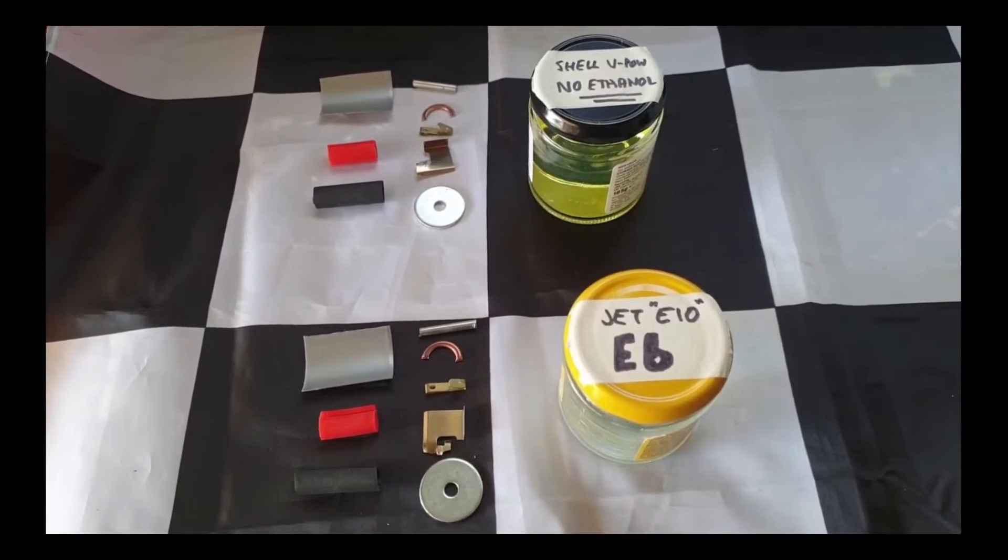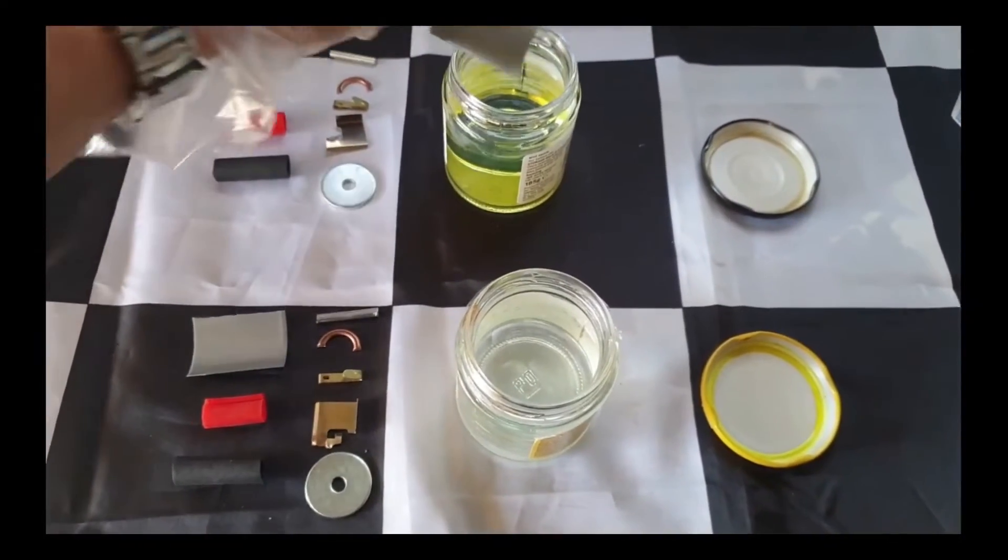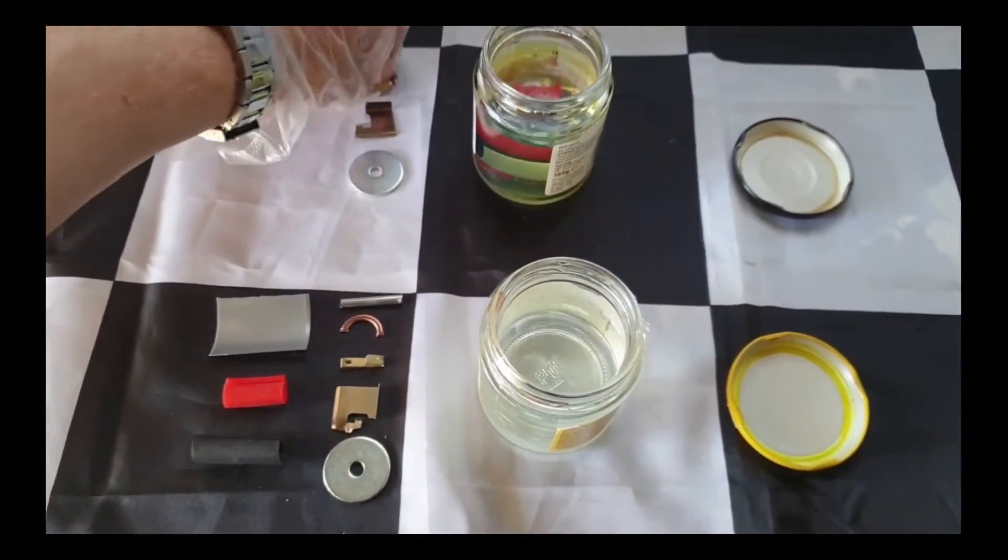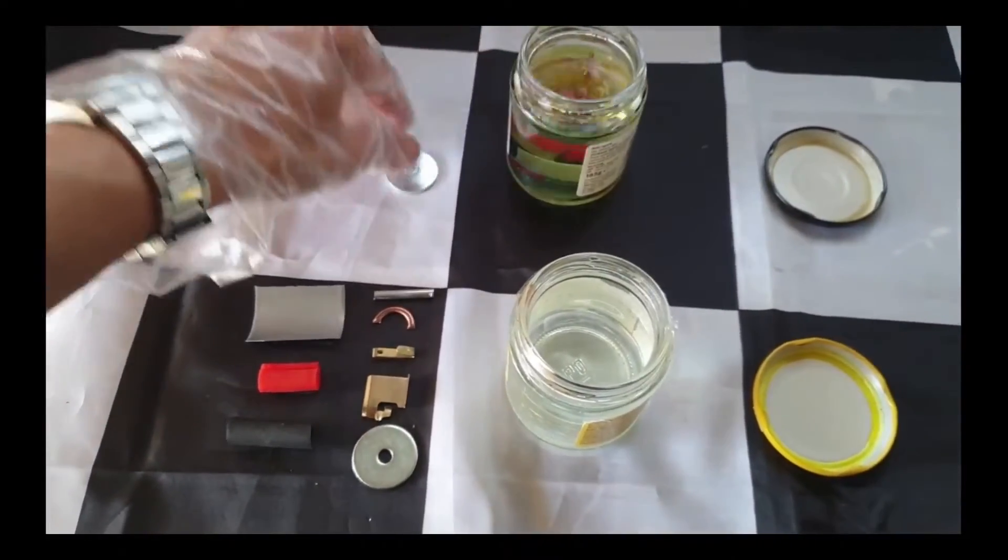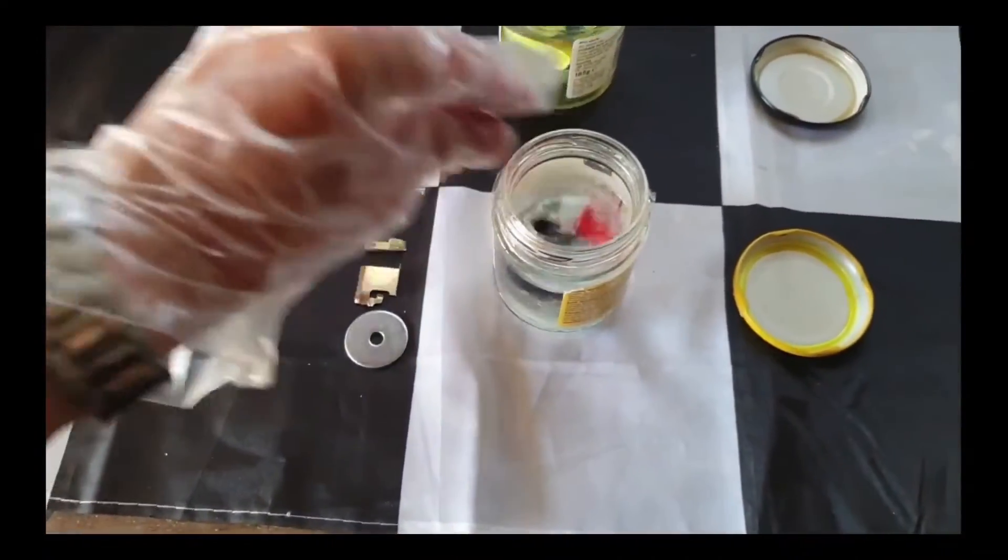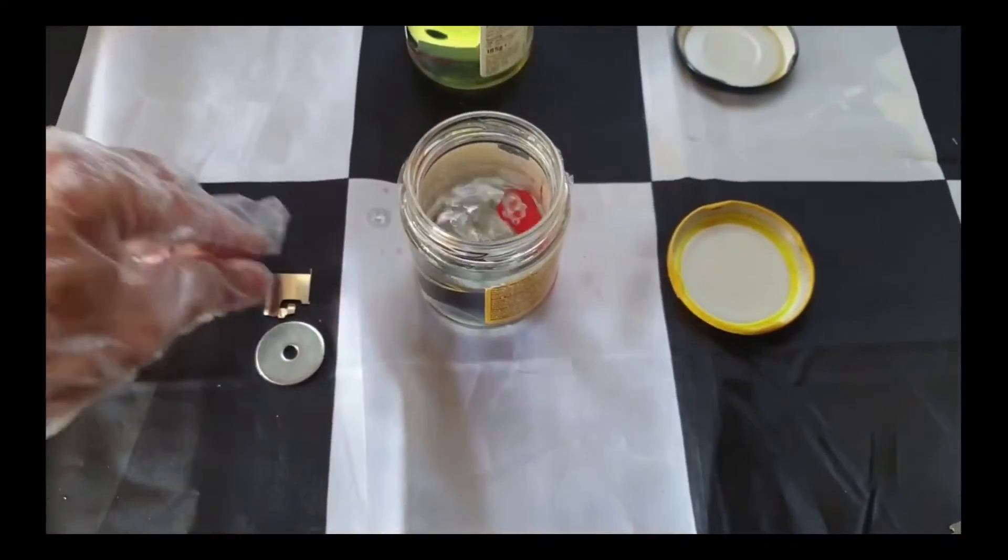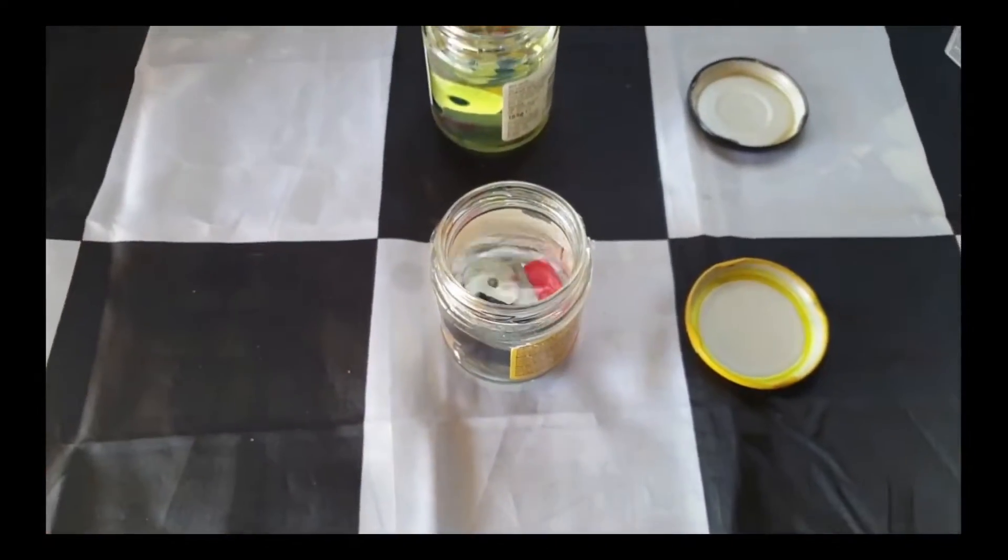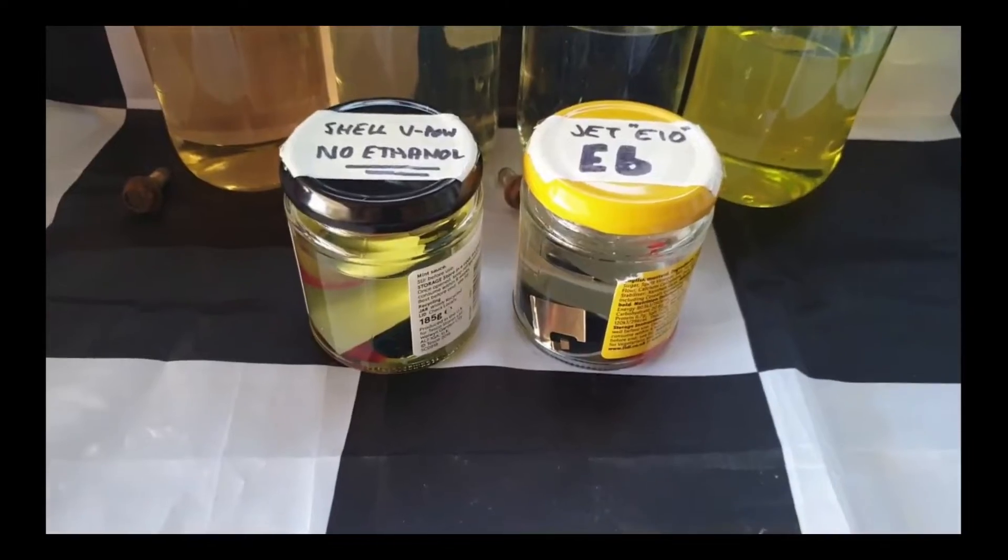For the first test we're just going to crudely submerge each item in 150 milliliters of Shell V-Power which is from a recently tested batch shown for the ethanol free and 150 milliliters of Jet's E10 which has again been tested recently and found to contain 6% ethanol. These will be left in airtight jars for a month and I'll likely shake them a couple of times a week to simulate a car's motion and perhaps fuel flow albeit not under any form of pressure. Depending on the results and if the video proves popular I could also retest them open to the atmosphere or under some simulated fuel pressure.